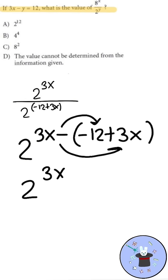We then distribute the negative to get 3x plus 12 minus 3x. The 3x and the minus 3x cancel out, and we get 2 raised to 12.